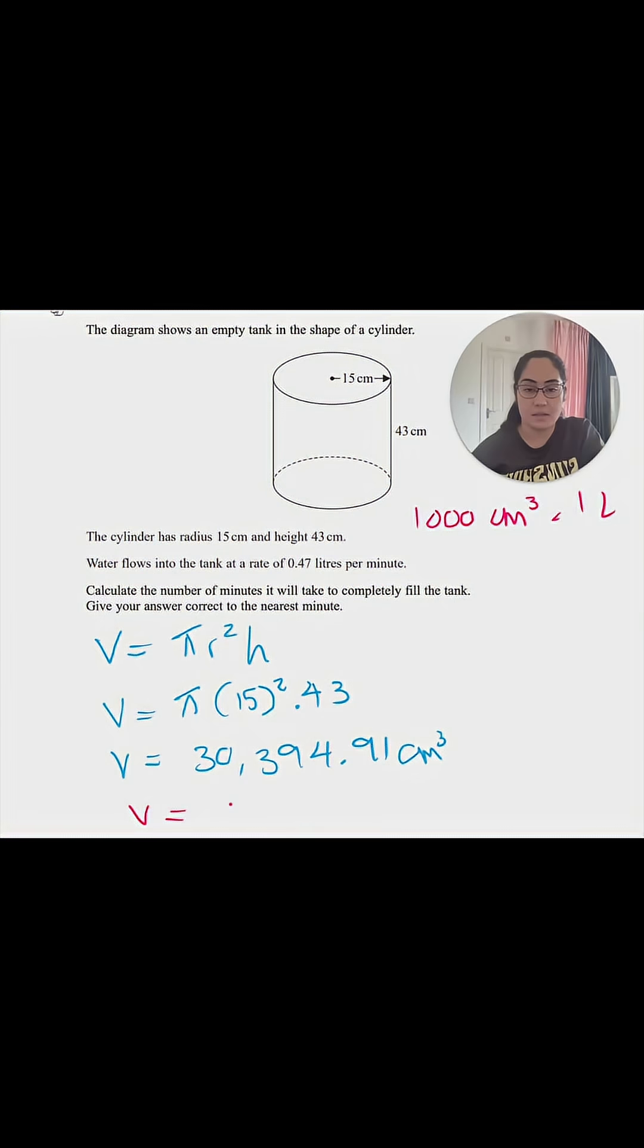Now if you want to know how long it's going to take to fill it up, we're going to divide it by the rate. We're going to do 30.395 divided by 0.47, and that gives us 64.67. Rounded correct to the nearest minute, that would be 65 minutes.